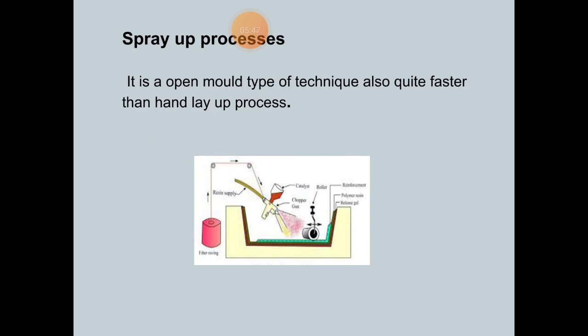Now turn to the second method which is spray up processes. It is an open mold type of technique. It is quite faster than hand layup. The technique is very similar to hand layup, just more familiar by the figure. It is an advancement and automated process of hand layup.